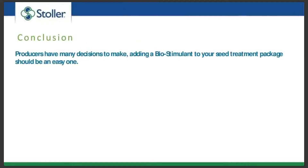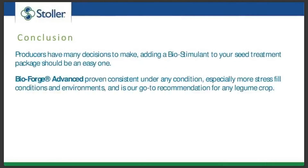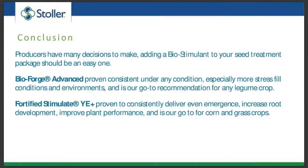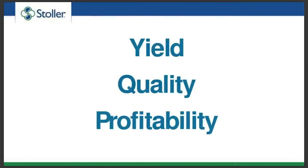As producers we have many decisions to make. Adding a biostimulant to your seed treatment should be an easy decision — it helps get that plant's genetic potential realized right from the start. Bioforge Advanced is proven consistent under virtually any condition but especially in more stress-filled conditions and environments, and is our go-to recommendation for legume crops. Fortified Stimulate Yield Enhancer Plus is proven to consistently deliver even emergence, increase root development and root growth, and improve overall plant performance — it is our go-to for corn and grass type crops. Yield, quality, and profitability — we're targeting all three by applying the right seed treatment from the start.